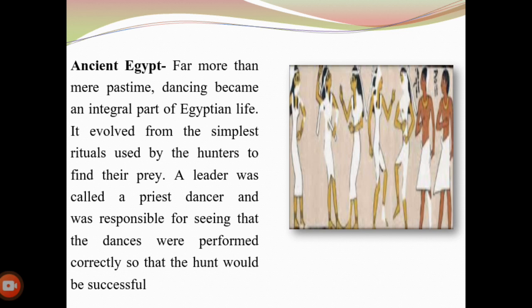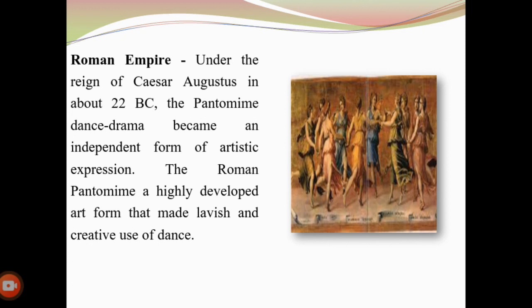Next is the Roman Empire. During the reign of Caesar Augustus in 22 BC, pantomime dance drama became independent as a form of artistic expression, and through that they were doing creative use of dance in a highly developed form.